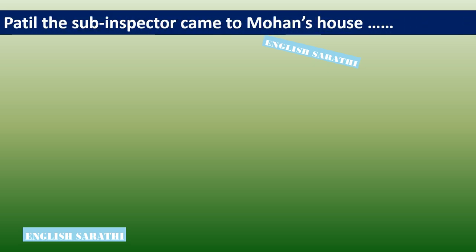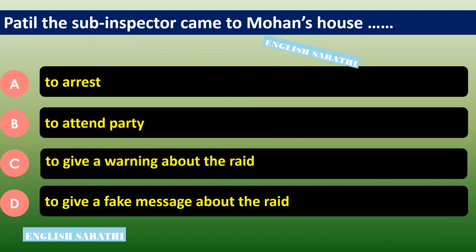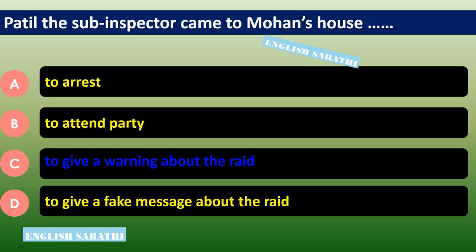Patil the sub-inspector came to Mohan's house dash. Options are: option A - to arrest, option B - to attend a party, option C - to give a warning about the raid, option D - to give a fake message about the raid. The correct option is option C - to give a warning about the raid.